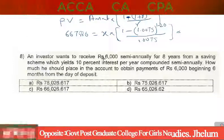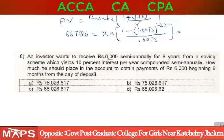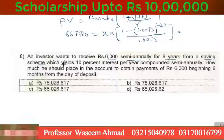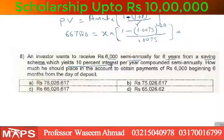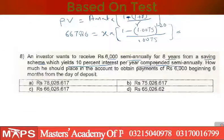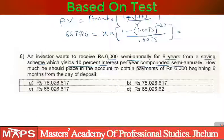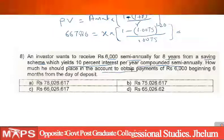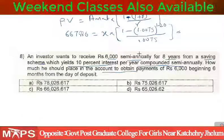Question 8: An investor wants to receive $6,000 semiannually for 8 years from a savings scheme which yields 10% interest per year compounded semiannually. How much should he place in the account to obtain payments?